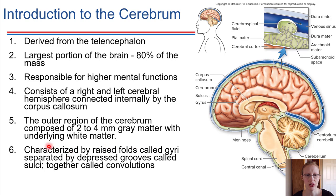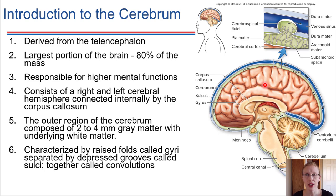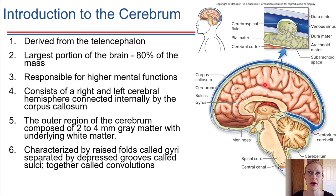The gyri and sulci are things that can potentially be modified. If somebody is really practicing a particular skill, certain regions of the brain — the gyri associated with those regions — actually start to grow. The brain is not necessarily a static thing; it's something that can be reorganized, remapped. Resources can be reallocated as needed, depending on what tasks we choose to do and what things we choose to think about.